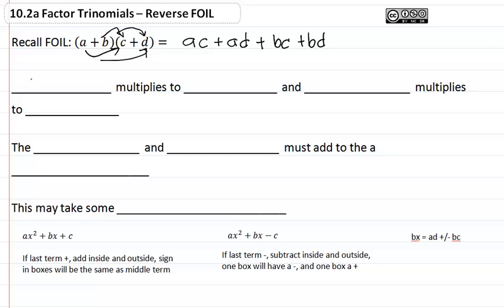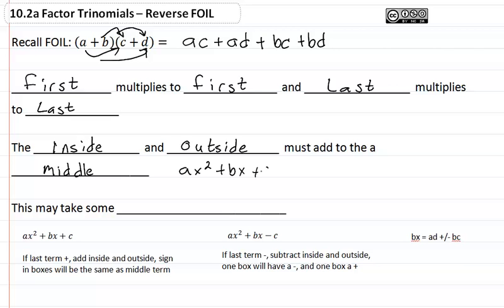In other words, the first term multiplies to the first term and the last term multiplies to the last term. The inside and outside must add to the middle term. We're talking about ax² + bx + c where this is our middle term. This may take some trial and error.